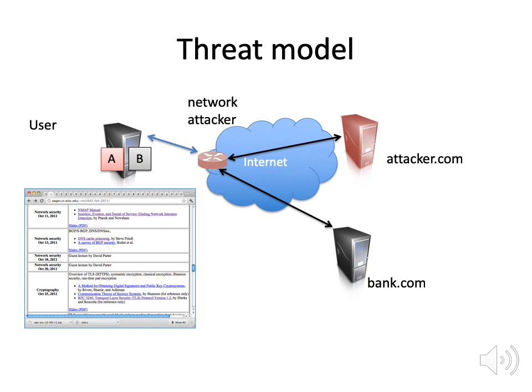The other thing we have to worry about is an attacker in the network who can see all the traffic going by — somebody sitting in a coffee shop snooping on Wi-Fi looking at all the packets as they go by, or somebody at a telecom, or the NSA working at AT&T who can see the terabytes of traffic that traverses AT&T every day. These are all examples of attackers that we're worried about.